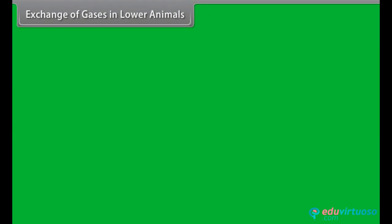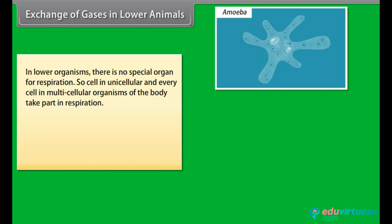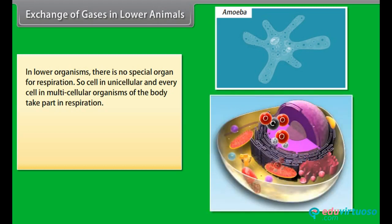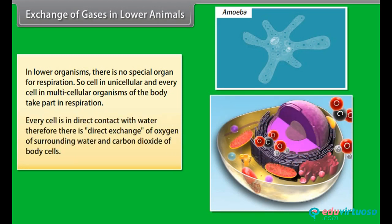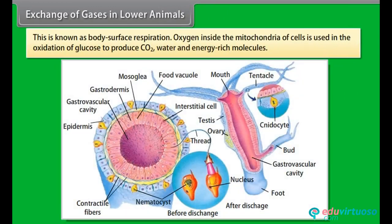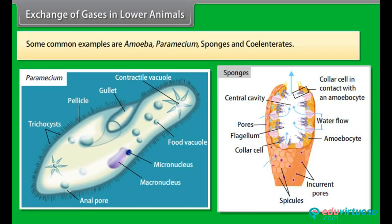Exchange of gases in lower animals: In lower organisms there is no special organ for respiration, so every cell in unicellular and multicellular organisms takes part in respiration. Every cell is in direct contact with water, so there is a direct exchange of oxygen from surrounding water and carbon dioxide from body cells — known as body surface respiration. Oxygen inside the mitochondria is used in the oxidation of glucose to produce CO2, water and energy-rich molecules. Common examples include amoeba, paramecium, sponges and coelenterates.